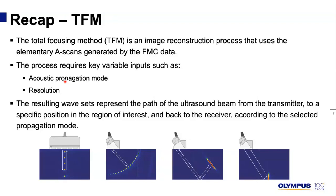The resulting wavesets represent the path of the ultrasound beam from the transmitter to a specific position in the region of interest and back to the receiver according to the selected propagation mode. For example, with a 2T waveset, we expect to pulse, hit something, and then receive. With a 4T waveset, we expect to pulse, skip, hit something, come back, skip, and then go back into the probe.